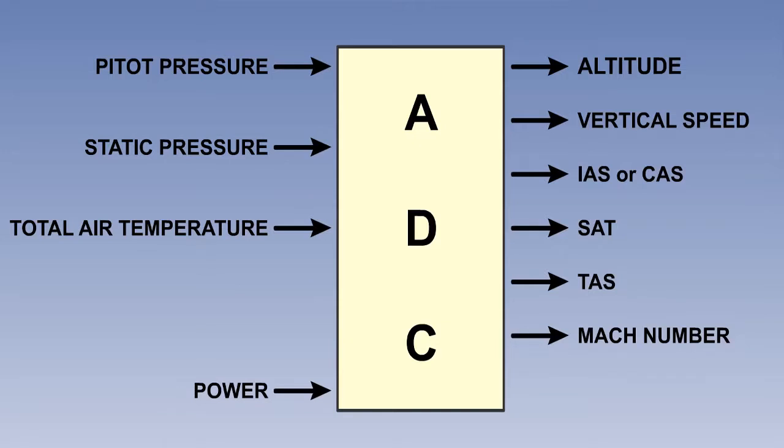A later addition from the 1980s onwards was an input of angle of attack, usually called alpha. This allowed safe flight at lower speeds, particularly on the approach, with no requirement to correct for the effect of changing weight as fuel was burnt.